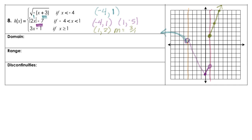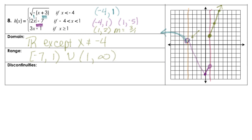Our domain looks like it's accounted for everywhere except at negative 4, so we're going to have all reals except x cannot equal negative 4. The range looks pretty broken up: from negative 7 up to positive 1 — not containing that 1 — and then union over on the other side from 1 to infinity. For discontinuities, we have a removable at x equals negative 4, and then a jump at x equals 1.